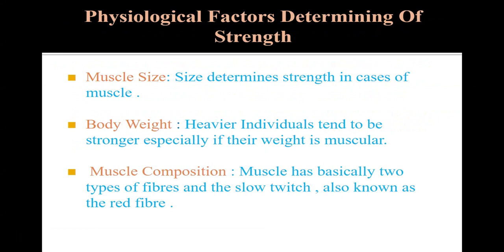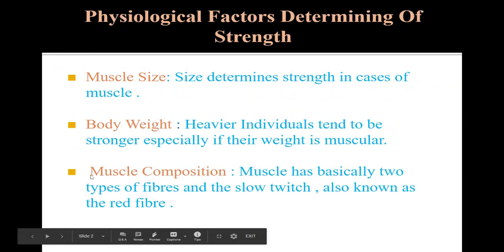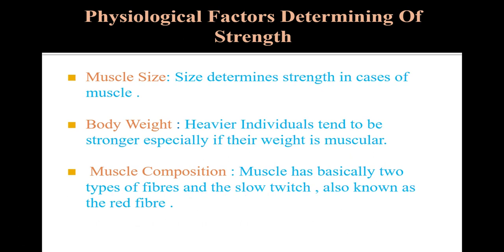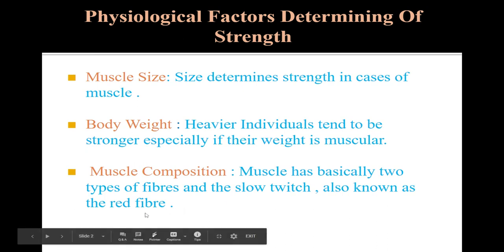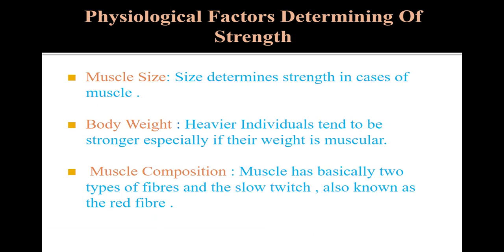Our next point is muscle composition. Muscles have basically two types of fiber: the fast-twitch or white fiber, and slow-twitch also known as the red fiber. The ratio of these fibers is generally fixed and cannot change. The more fast-twitch muscle fiber a person has, the higher the power the muscle will generate.